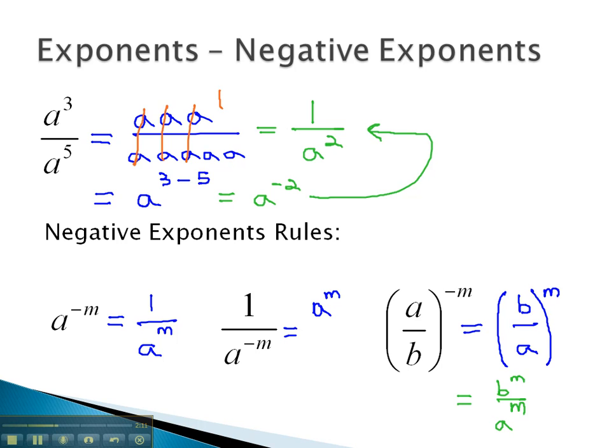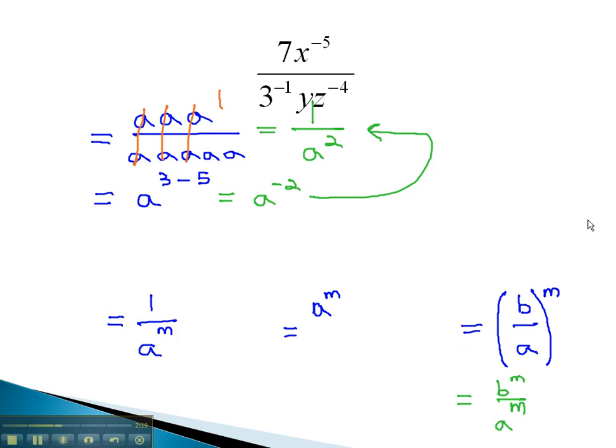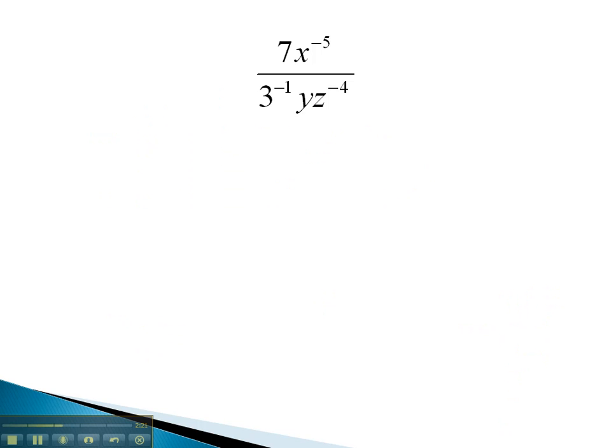Let's take a look at some examples where we can see simplifying by moving factors around that have negative exponents. In this expression, there are several negative exponents. It's important to remember that negative exponents are only going to affect the factor they are attached to.